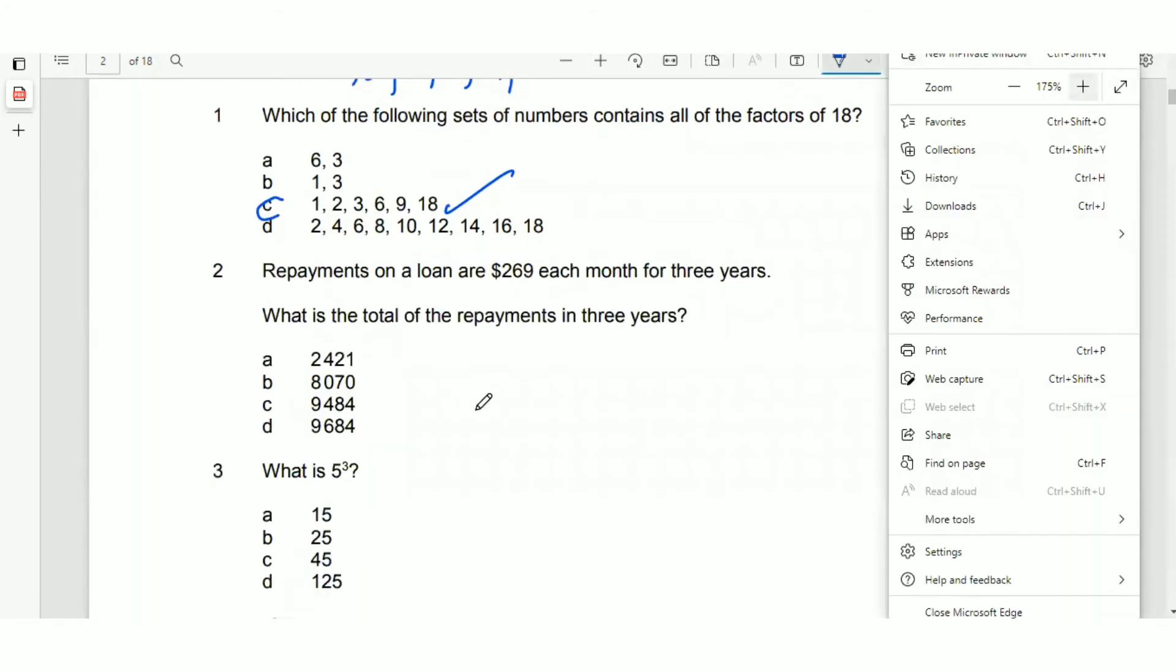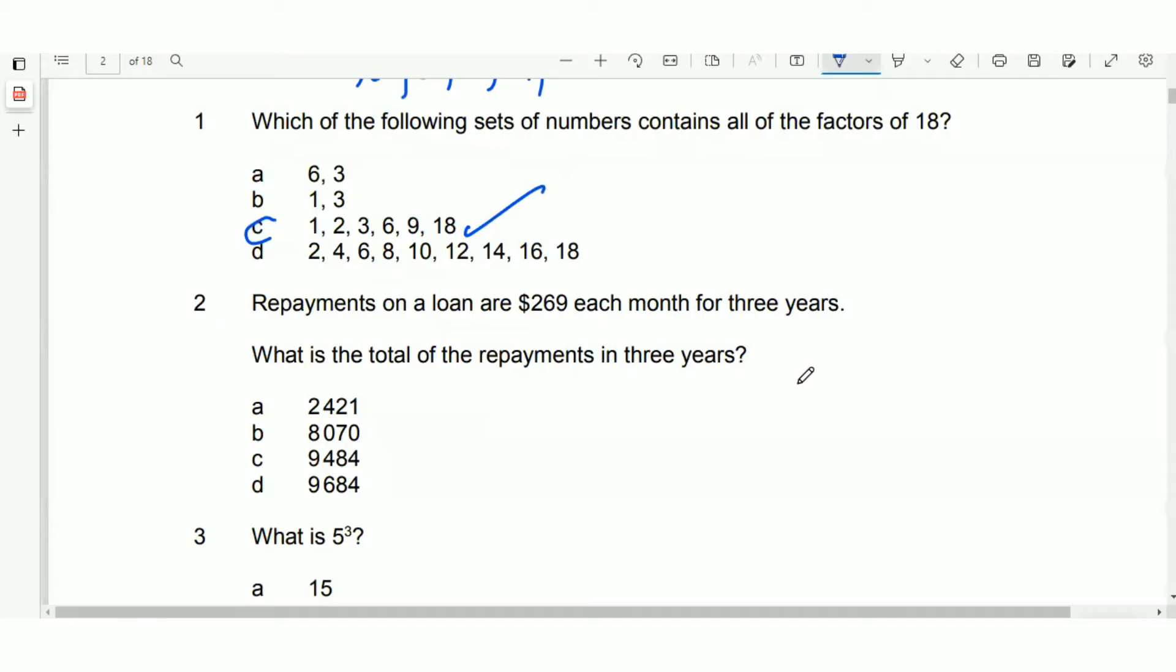Let's go for question two. Repayments of a loan are $269 per month for three years. They want to know the total repayments in the three years. What we want to do is make sure that we are understanding what is going on, because for three years you're talking about 3 times 12, that's 36 months.